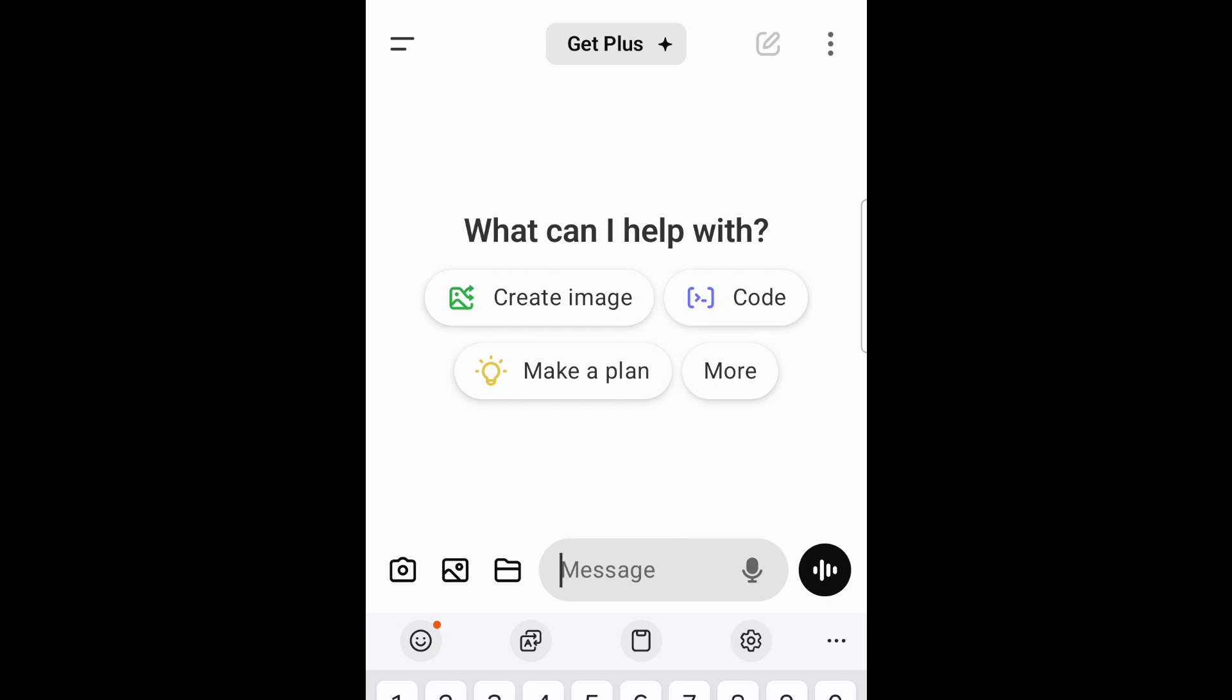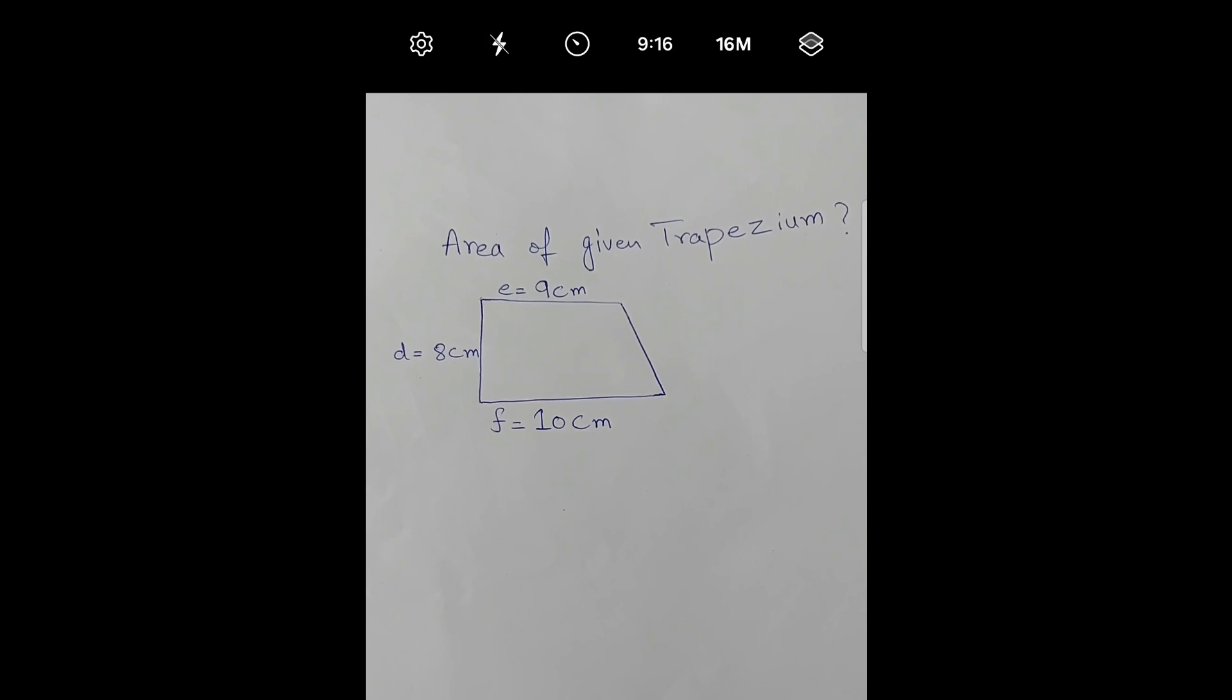Then scan the picture or take the picture using the ChatGPT app. So simply click on the camera icon, or if you already have that picture in your phone you can click on this picture icon. I will click on the camera icon. This is the question, so I will take the picture of this question.